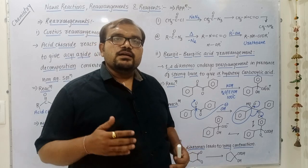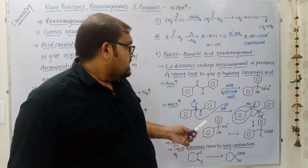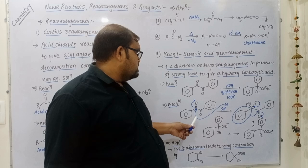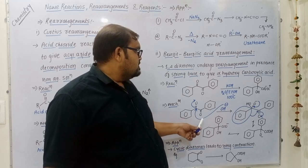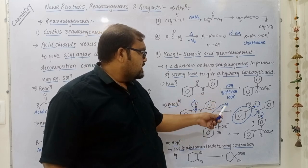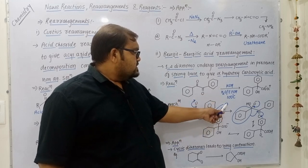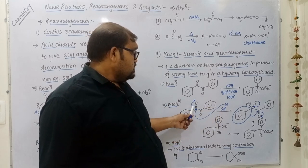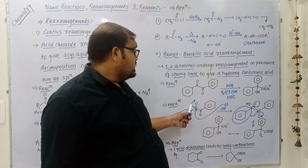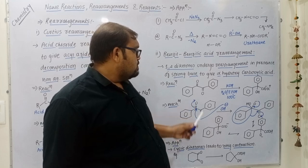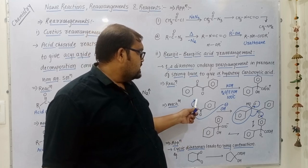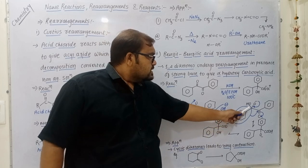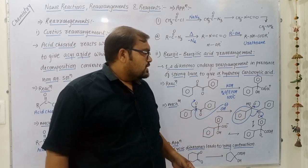In the mechanism, when benzil is reacted with strong base, OH⁻ as nucleophile attacks over the carbonyl carbon. The pi bonding electrons shift over oxygen, and oxygen gets a negative charge, giving an intermediate product.